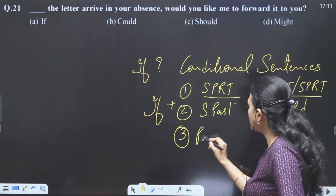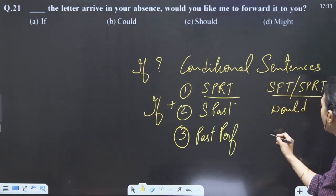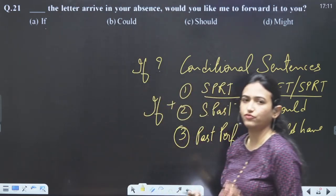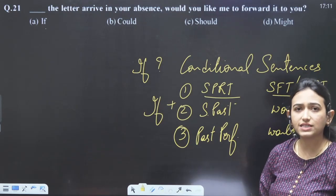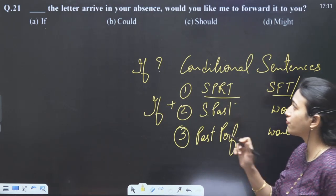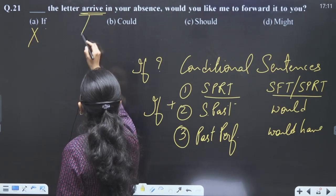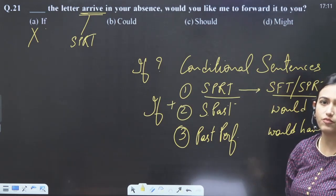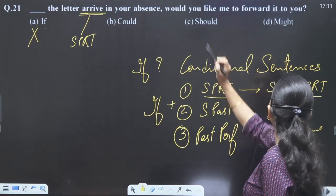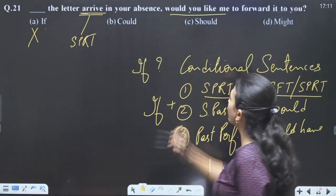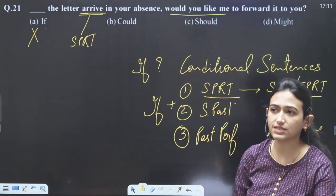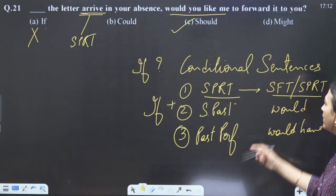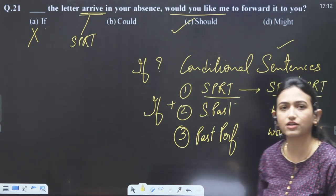The three conditions for using 'if': first, simple present tense followed by simple future or simple present; second, simple past tense followed by 'would'; third, past perfect followed by 'would have.' Here, if you use 'if,' the tense is simple present, so simple future should come. But we see 'would you like' — that is not simple future or simple present. So 'if' is completely wrong. The answer is 'should.'